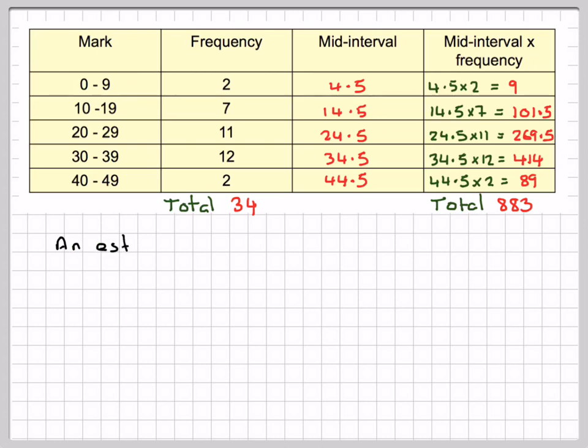Then we calculate the estimate for the mean. We use approximately equals signs because it's an approximation. We take 883 and divide it by 34, which gives us 25.970 on the calculator.